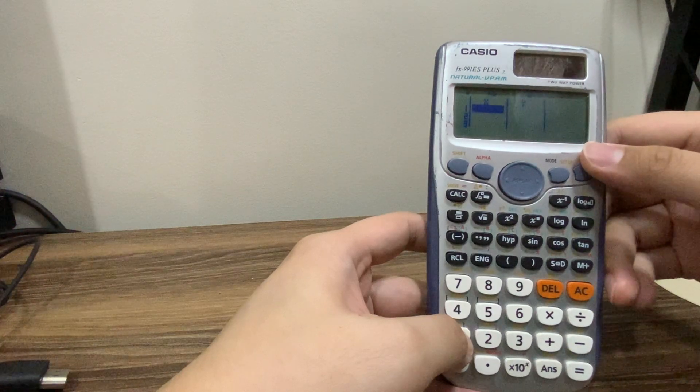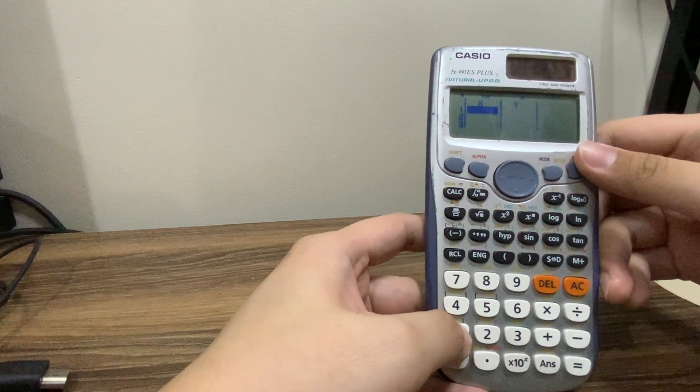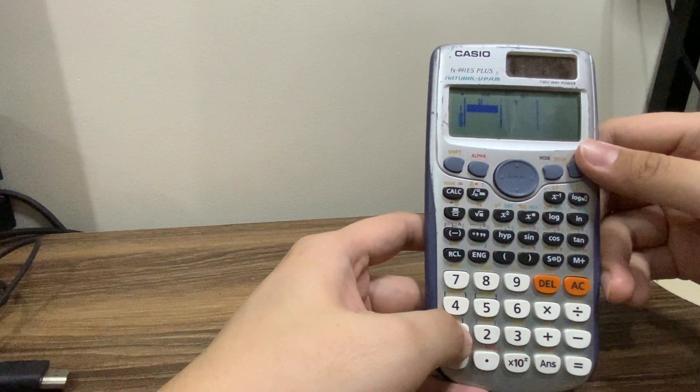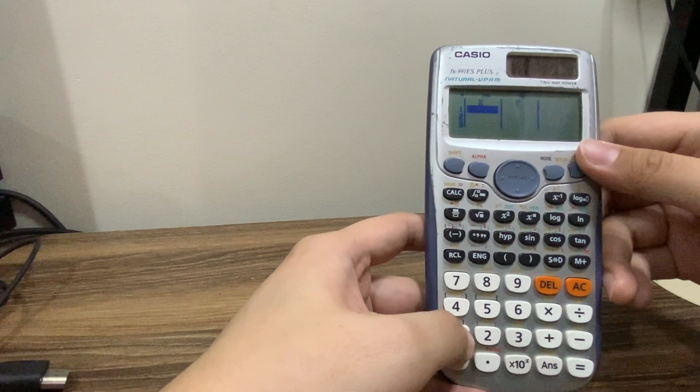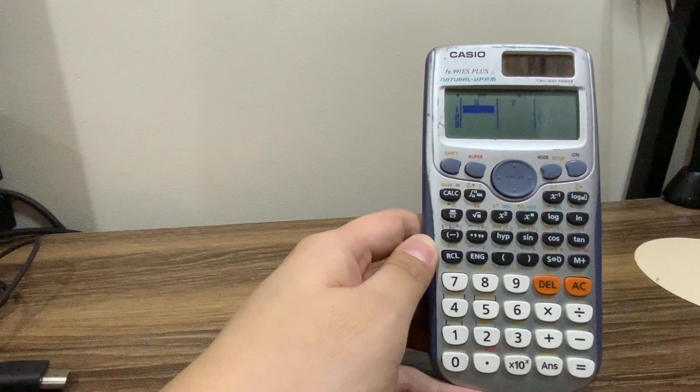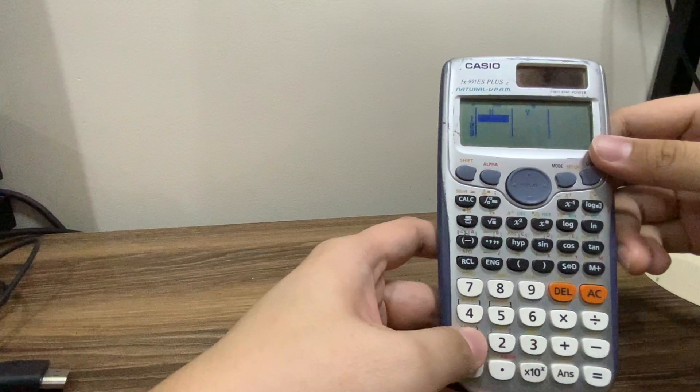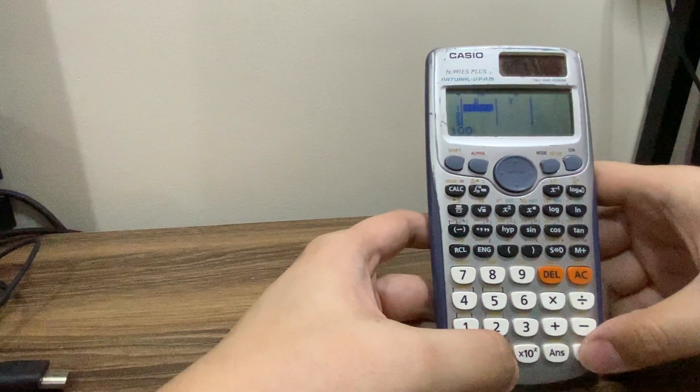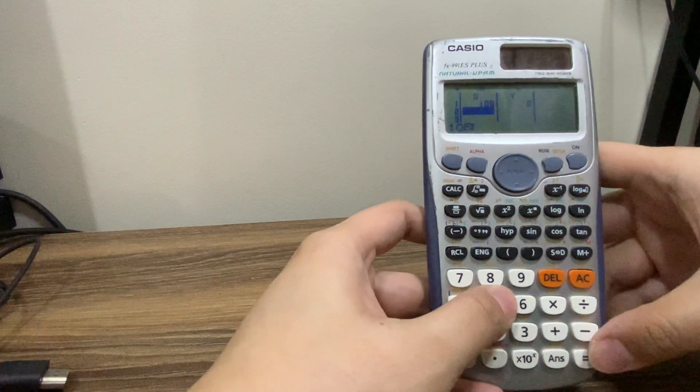So input the known data. Okay, so the known data, if let's say we want to find 102, it's more recommended that 100 and 105 be placed in the x value. Okay, so input 100 and 105.